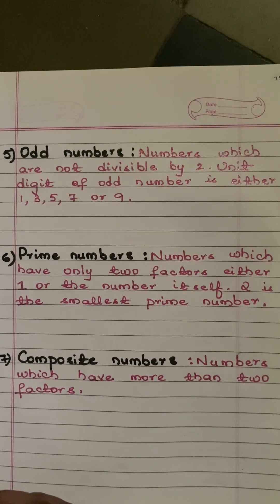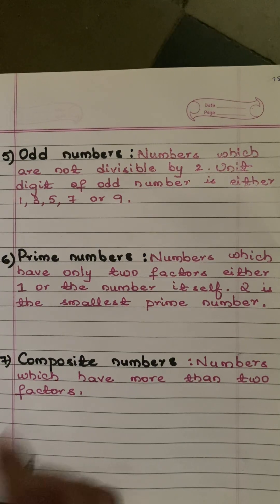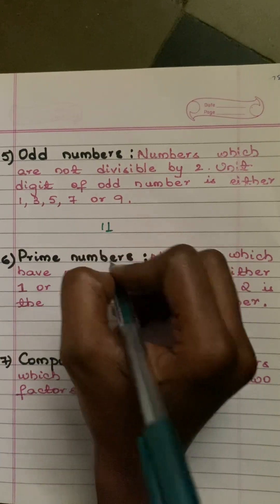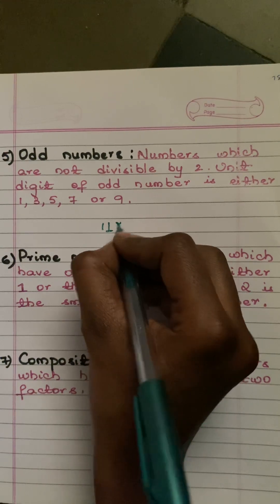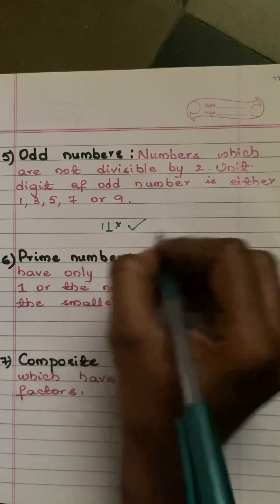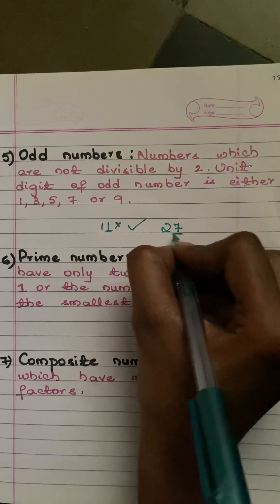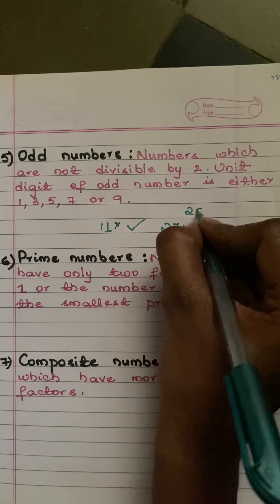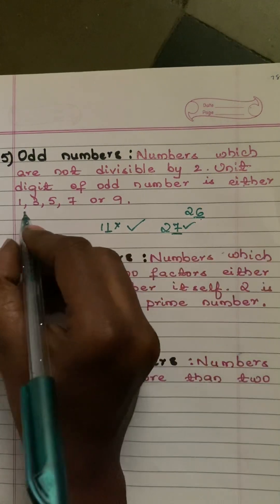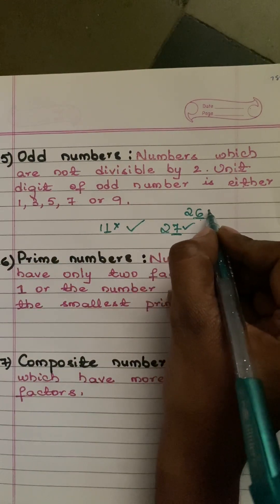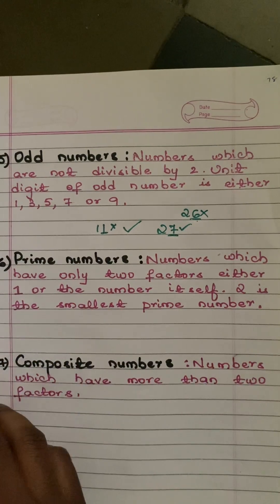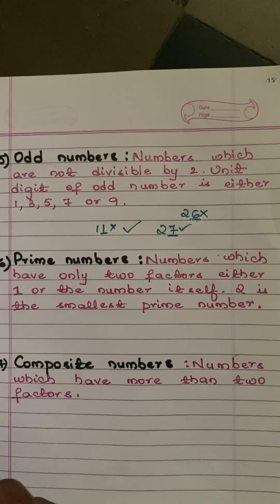Next comes odd numbers. Odd numbers are exactly the opposite of even numbers — numbers which are not divisible by two. The unit digit of an odd number is either one, three, five, seven, or nine. For example, 11 has unit digit one so it is odd; 27 has unit digit seven so it is odd; but 26 has unit digit six, which is not in the odd set, so it is not an odd number.